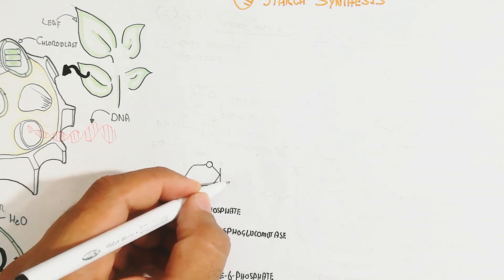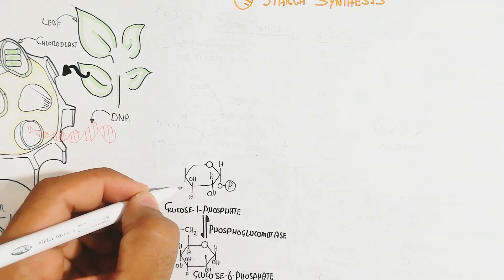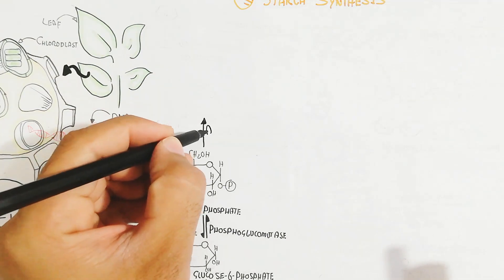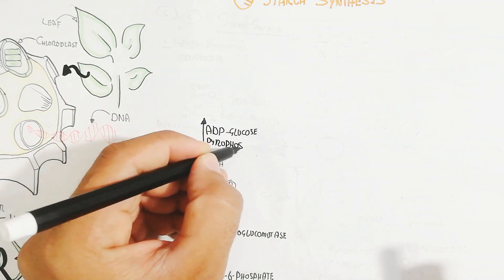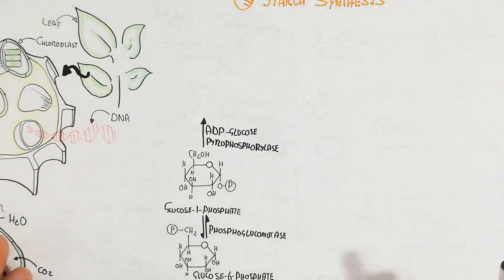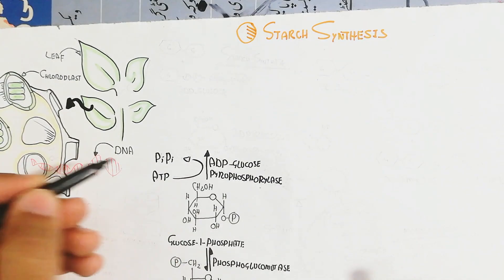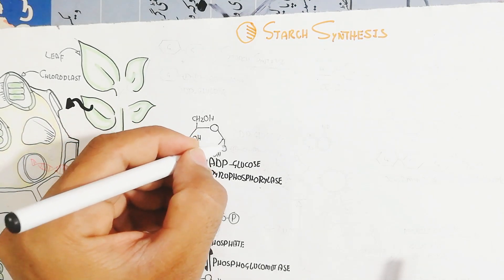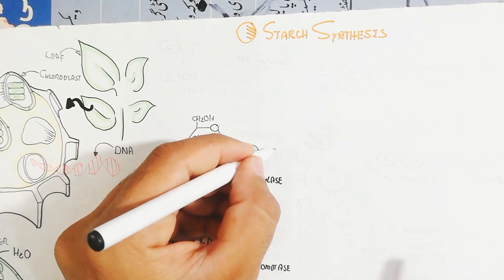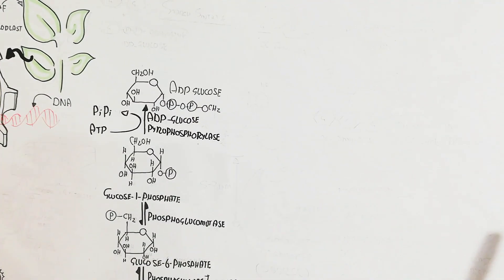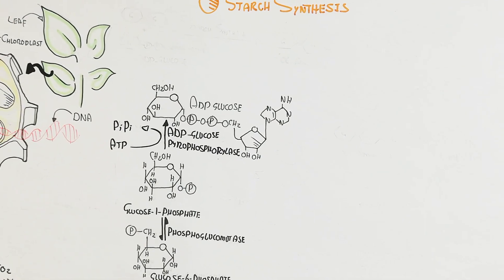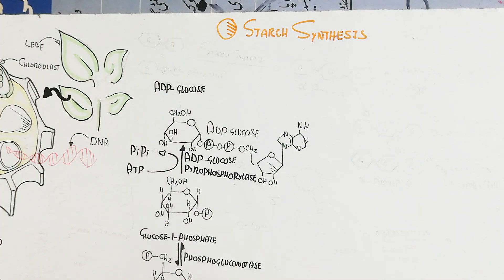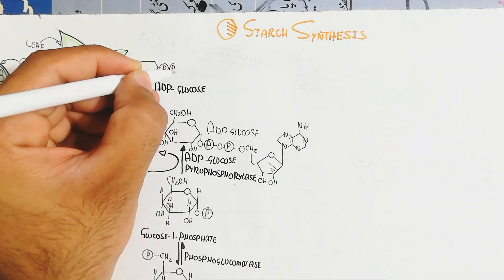This gives us glucose-1-phosphate. Glucose-1-phosphate, in the presence of ADP-glucose pyrophosphorylase enzyme, releases two inorganic phosphates while ADP binds with glucose to form ADP-glucose. ADP-glucose contains adenosine diphosphate linked with glucose.